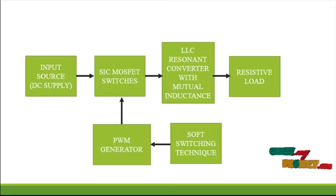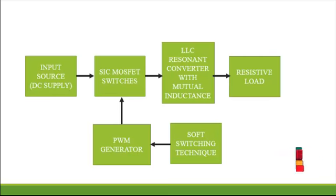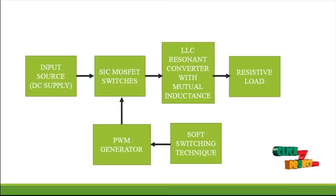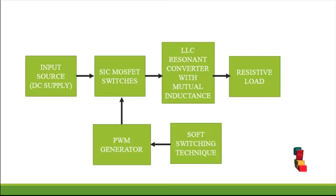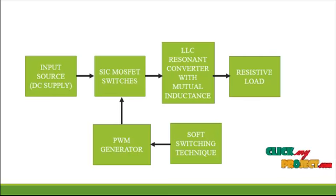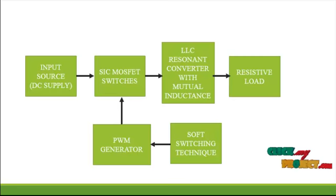Generally the input source is a DC supply. The DC supply is fed to the LLC resonant converter with mutual inductance. This LLC resonant converter has SiC MOSFET switches, LLC resonant components, and mutual inductance. The MOSFET switches receive pulses from the PWM generator, which is used to generate the pulses.